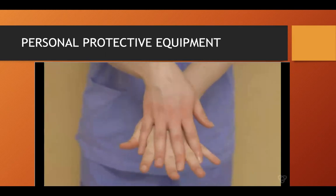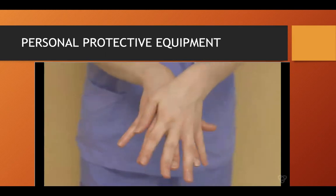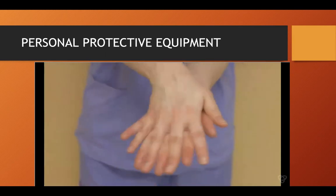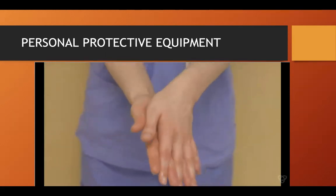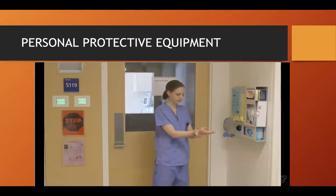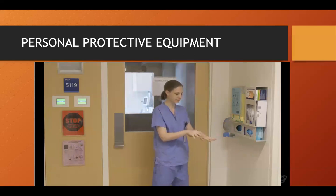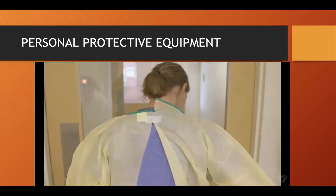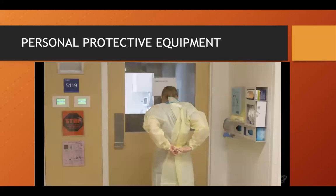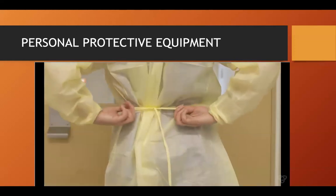Rub palms, wrists, in between fingers and thumbs, back of hands, and along the nail beds. Alcohol-based sanitizer is the preferred method; use soap and water when hands are visibly soiled. Don your gown by first closing the back of the neck, then tie the waist ensuring all clothing is covered.